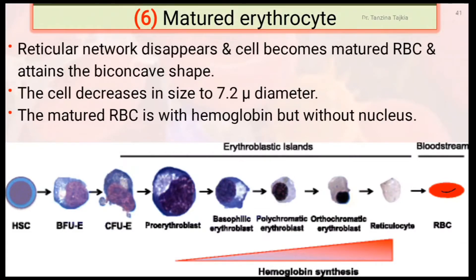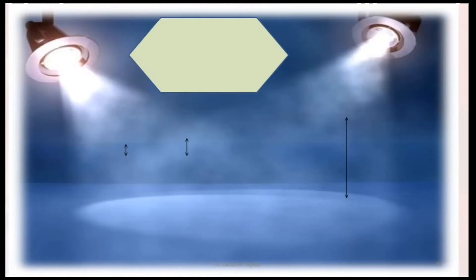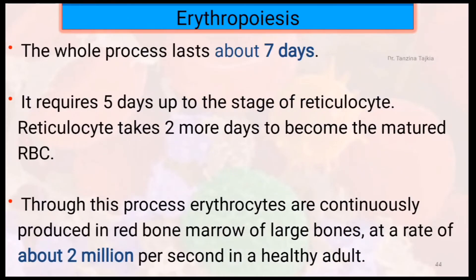At last, mature erythrocyte. In mature erythrocyte, the reticular network disappears and cells become mature and attain the biconcave shape. The cell decreases in size to 7.2 micrometers in diameter. The mature RBC contains hemoglobin but no nucleus. This figure shows all about erythropoiesis — the side view and top view of red blood cells with their diameter. The whole process lasts about 7 days: 5 days up to the reticulocyte stage, and the reticulocyte takes 2 more days to become the mature RBC.